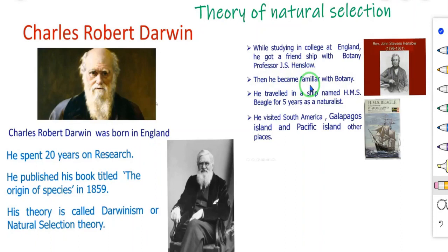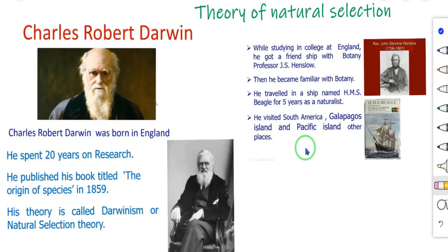At that time the British Admiralty planned a voyage of exploration for five years on a ship named HMS Beagle around South America. Dr. Henslow was asked to nominate a young naturalist for the voyage, and Darwin was given the opportunity. During his five years' voyage he visited many parts of the world including the Galapagos Islands and Pacific Islands, making elaborate observations on the nature of the land, plants, and animals of the regions he visited. He then worked for a further 20 years to develop the theory of natural selection.